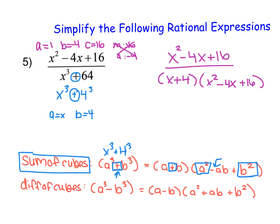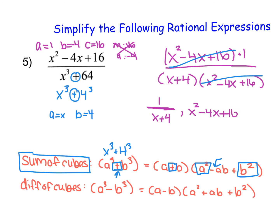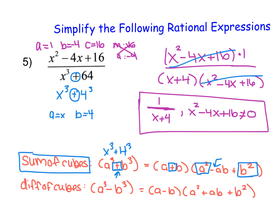We can see that the denominator's second factor, x squared minus 4x plus 16, matches the numerator exactly. Treating the numerator as 1 times x squared minus 4x plus 16, we can cancel the matching pieces, leaving 1 over x plus 4 as our simplified expression. Because we canceled a non-linear expression from the denominator, we note that x squared minus 4x plus 16 cannot equal 0 as our restriction.